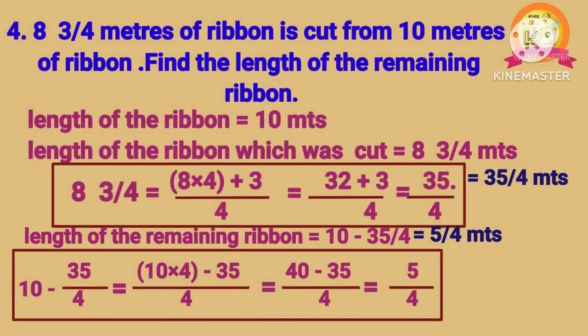Fourth problem: 8 3 by 4 meters of ribbon is cut from 10 meters of ribbon. Find the length of the remaining ribbon. Length of ribbon is 10 meters; ribbon cut is 8 3 by 4 meters. Converting 8 3 by 4 into an improper fraction gives 35 by 4. Remaining ribbon: 10 minus 35 by 4. After subtraction, we get 5 by 4 meters.